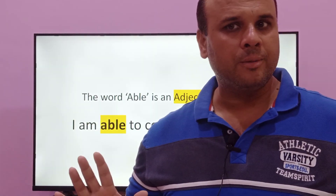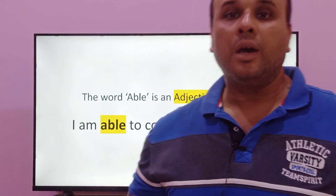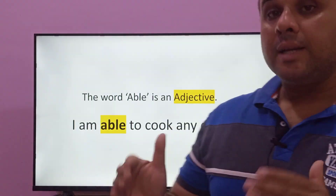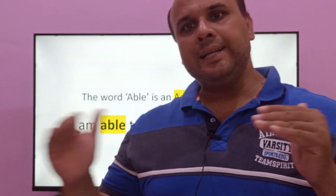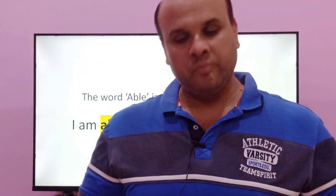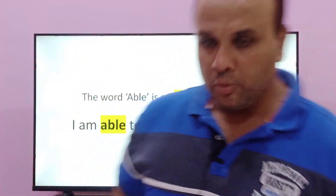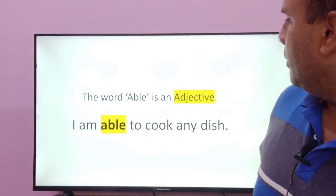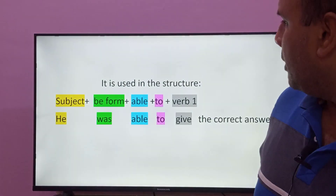Can you understand this? Good. So in this sentence 'able' is used as an adjective. Now let's understand how to use the word 'able' in a sentence — I will explain this on the next slide.